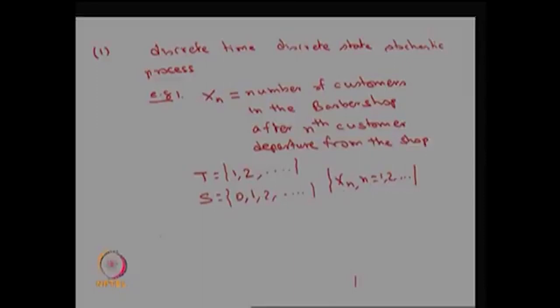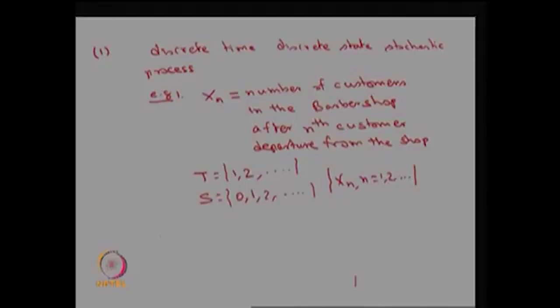This is a random variable because you never know how many customers are going to be in the system after the nth customer leaves. It is a real-valued function satisfying all the properties of the definition. From the probability space you have created a random variable, and this collection of random variables over n forms the discrete time, discrete state process. This stochastic process can be created using approach 1 — fixing n to get a random variable, then making a collection.